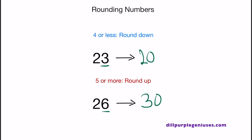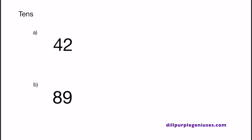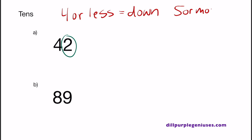Let's start working on some examples. We are going to round up to the nearest tens place. If you look at A, we have 42. Since we need to round 42 to the nearest tens place, we need to look at the number that is to the right of the tens place, which is 2. If it's 4 or less, you round down. 2 is less than 4, which means we need to round 42 down. When you round down 42, you should think of 40.